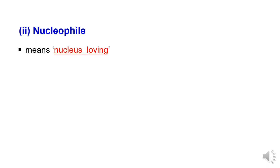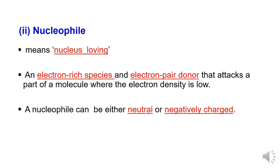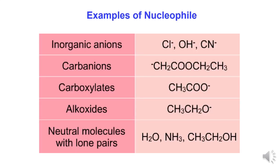2. Nucleophile: A nucleophile can be either a neutral molecule or a negative-charge species. Examples of nucleophiles include inorganic anions, carbanions, and alkoxides — all negative-charge species — and neutral molecules with lone-pair electrons, which are electron-pair donors, such as H2O, ammonia, and CH3CH2O.